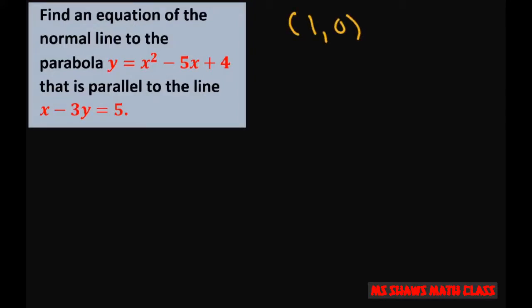Now we're going to write y minus 0 equals 1 third, because that's our slope, x minus 1. When you write this out, you get y equals 1 third x minus 1 third.